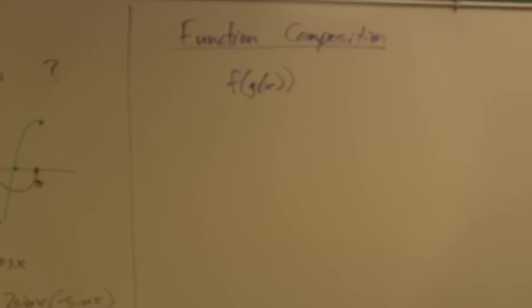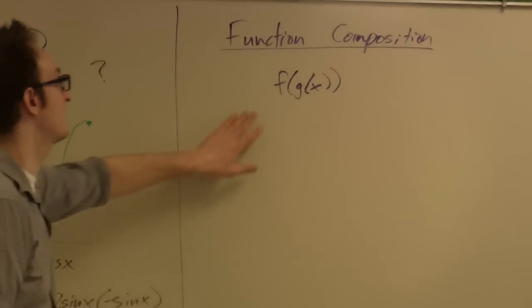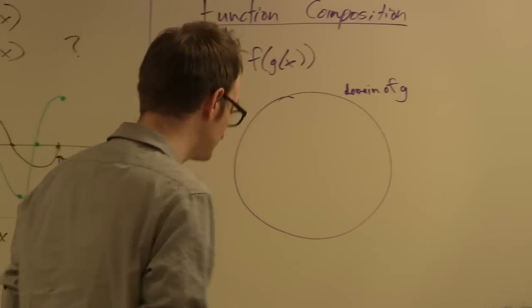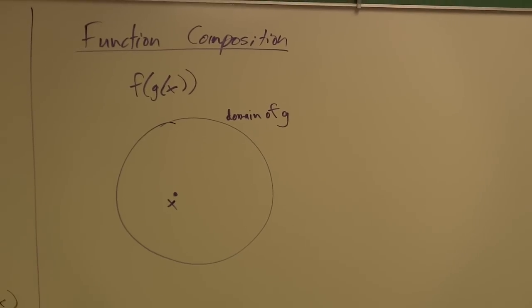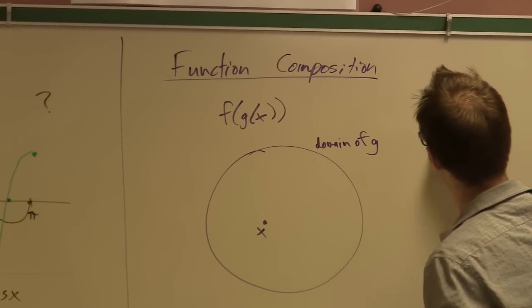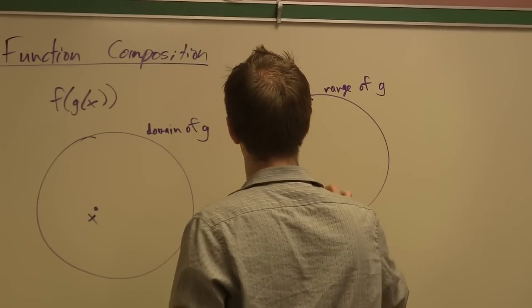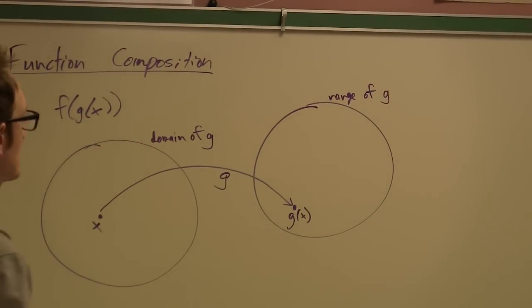What's the first thing that happens in that story? You plug x into the g function. So the story begins in the domain of g. We can draw a picture — here is a circle representing the domain of g. Suppose x is some number in the domain of g. When you plug x into g, you get something back: g of x. Here is the range of g. The g function takes points in its domain and matches them to points in its range.